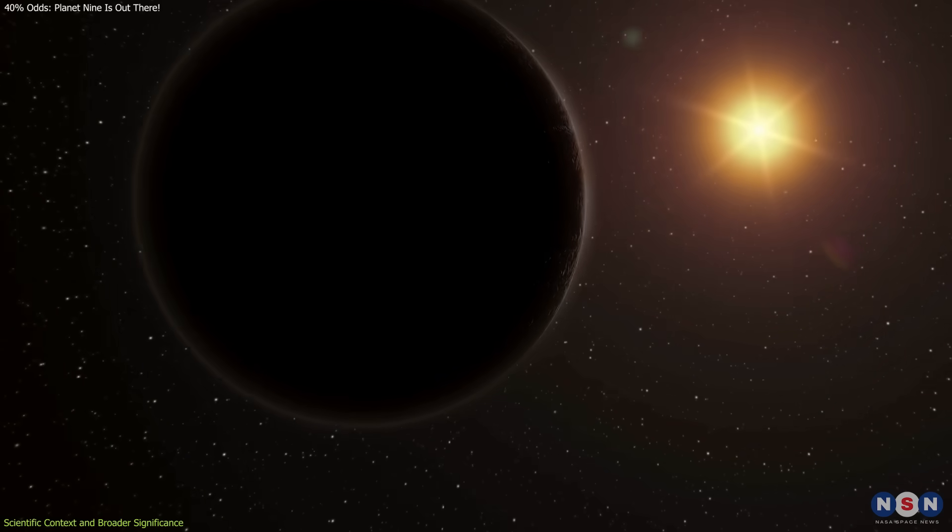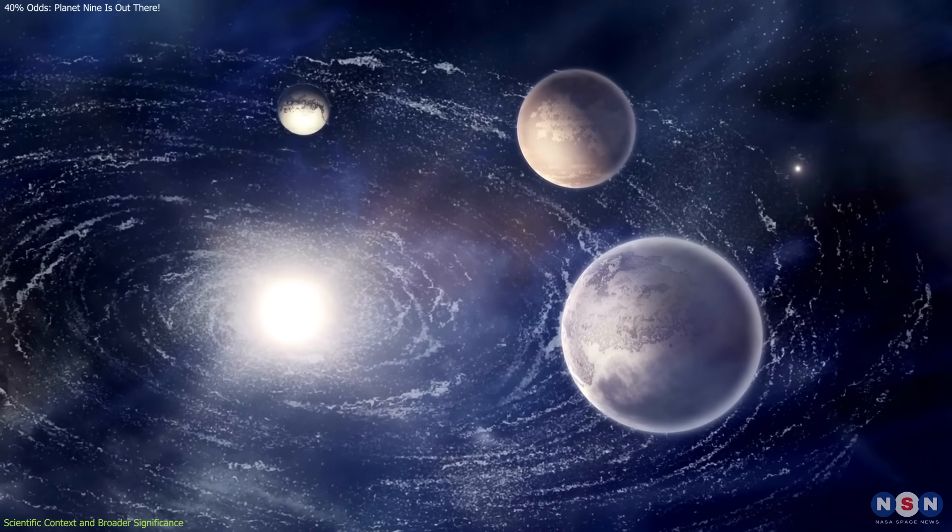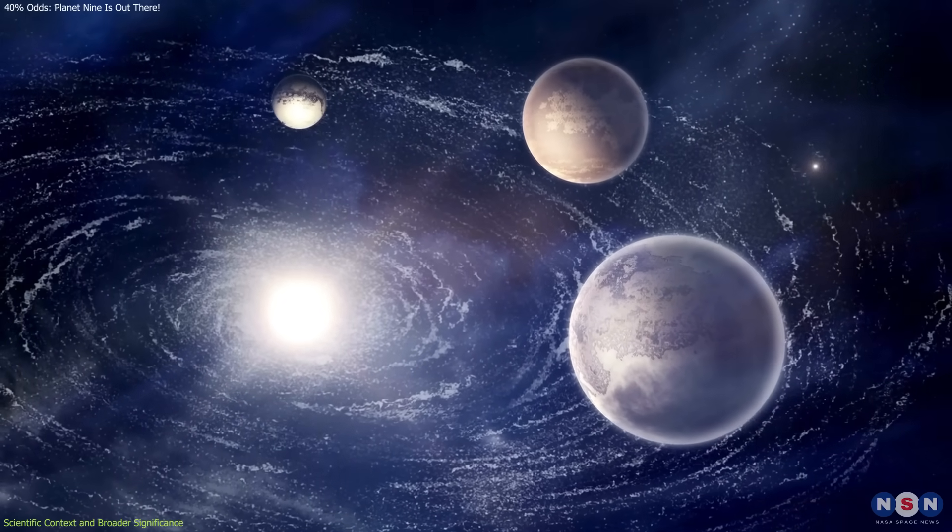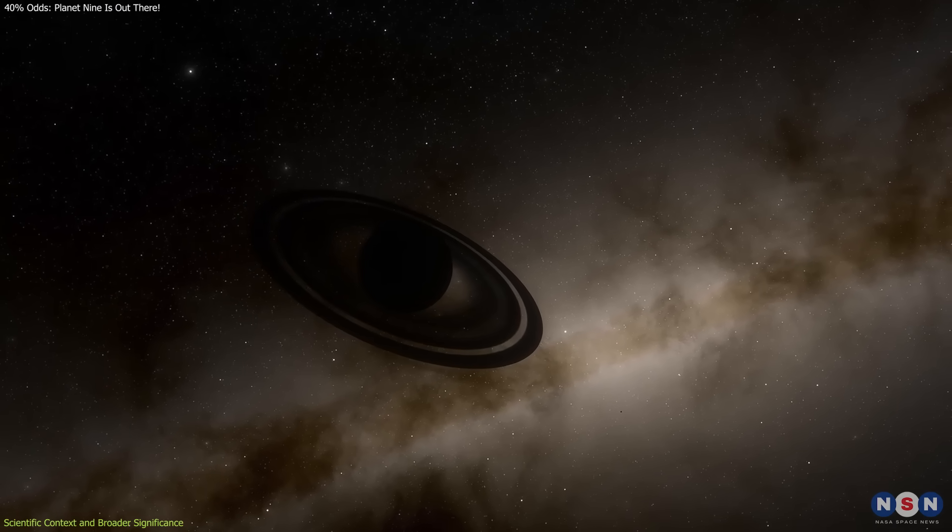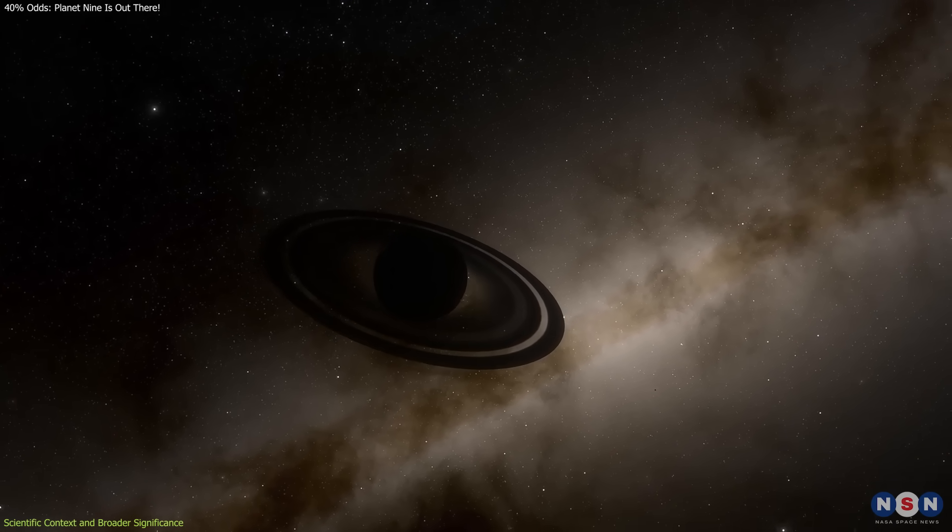It accounts not only for Planet 9-like objects, but also for wide-orbit exoplanets that have been observed in other systems. It also creates a framework to understand rogue planets—planets that roam the galaxy unbound by any star.